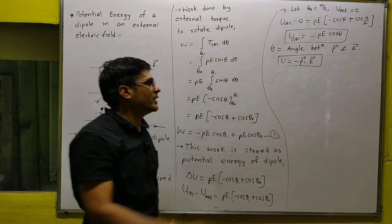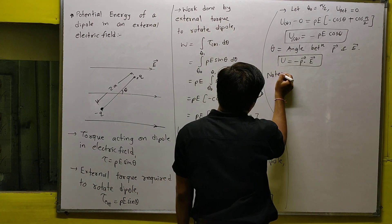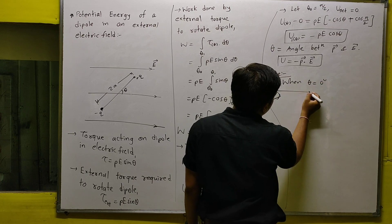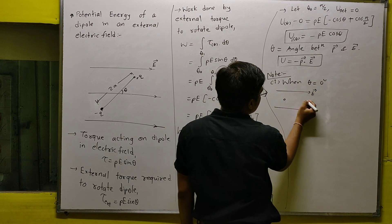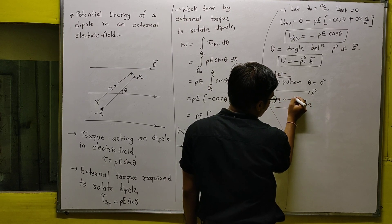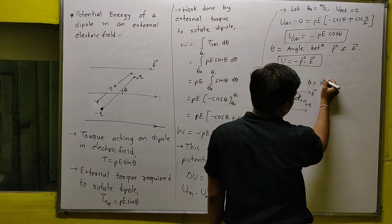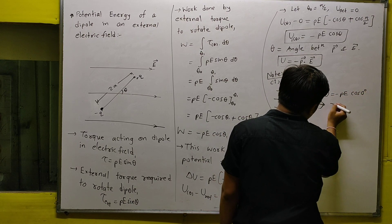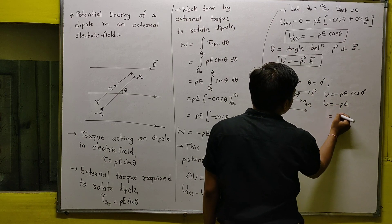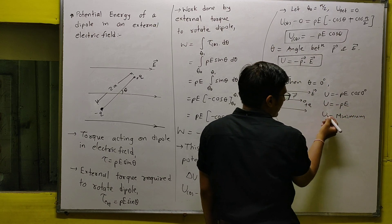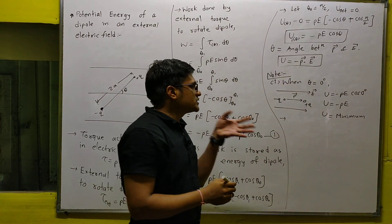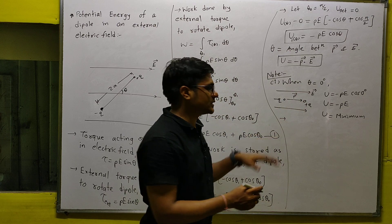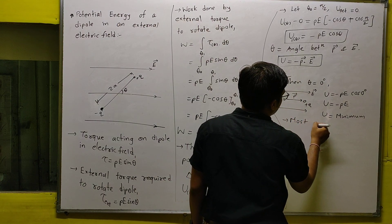There are important points to remember. First, when θ = 0: the electric field and dipole moment PE are in the same direction, so U = −PE cos0 = −PE × 1 = −PE. This is the minimum energy. When energy is minimum, every system is in its most stable condition. So θ = 0 is the most stable state of the dipole.